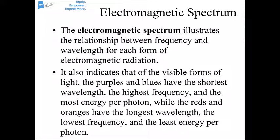The electromagnetic spectrum illustrates the relationship between frequency and wavelength for each type of electromagnetic radiation. Blues and purples have the shortest wavelength, highest frequency, and most energy per photon, while reds and oranges have the longest wavelength, lowest frequency, and least energy per photon.